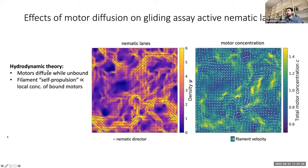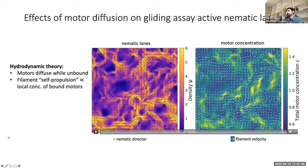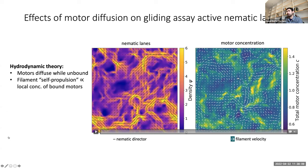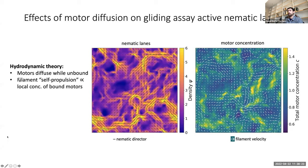One key piece, where the postdoc Fabian's work was critical, is understanding the effects of the motors being diffusive as opposed to stuck in place. Fabian developed this hydrodynamic numerical framework simulating not only the nematic lanes but also the concentration of motors as a separate concentration field. The microtubules forming the nematic lanes have a polarity field as well as a nematic tensor order parameter field. The motors are diffusing while unbound, but they're only pushing the microtubules while bound — so motors doing the active pushing are stuck in place at least temporarily. Filament self-propulsion is taken to be proportional to the local concentration of bound motors.